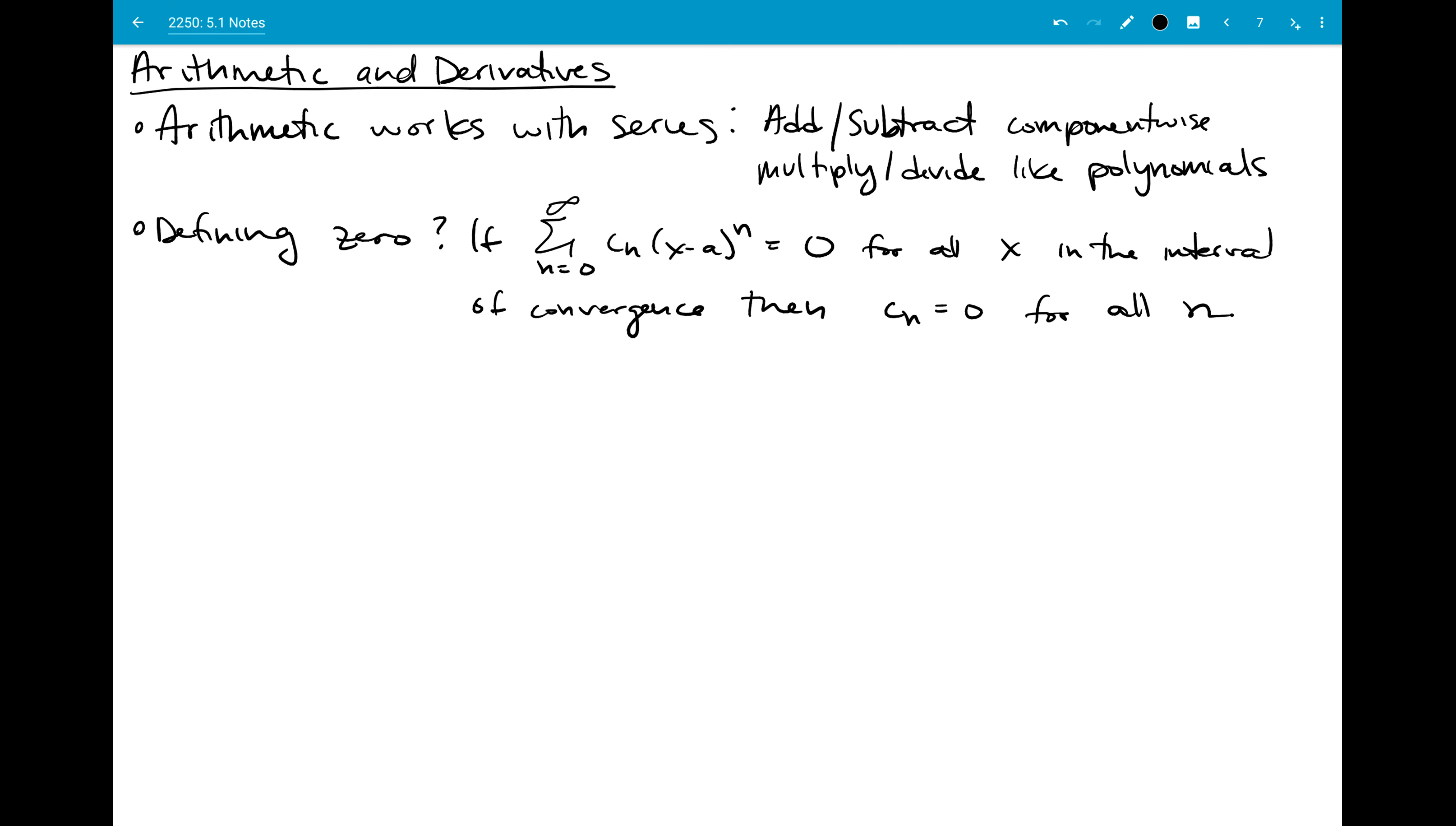And the reverse is really where that ends up being helpful for you. So if you get that cn would be zero for all n, then you don't have to bother with this series. It's zero. Which can maybe seem very intuitive. Of course, if you multiply everything by zero, you get zero. But we just have to say it to be really careful, because sometimes things don't work the way you think they would in math.